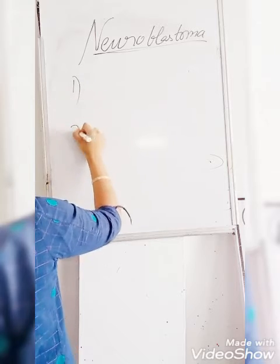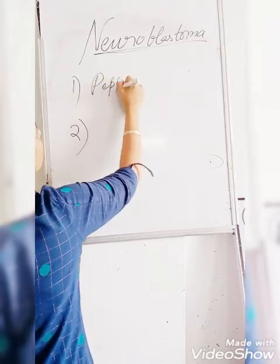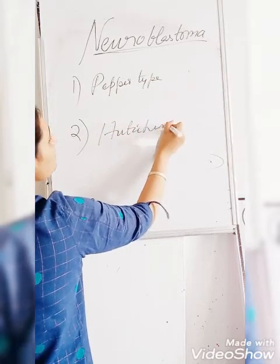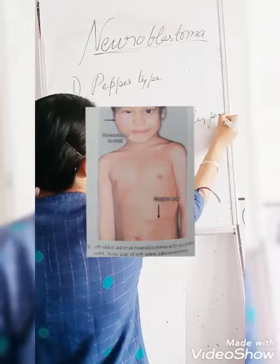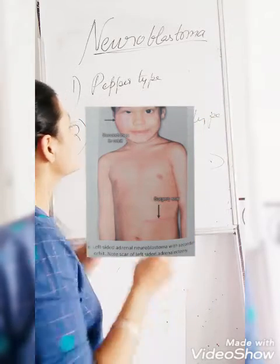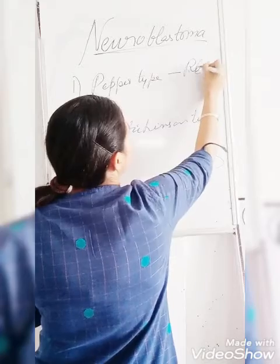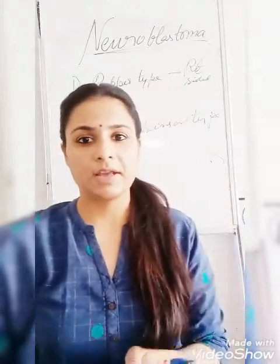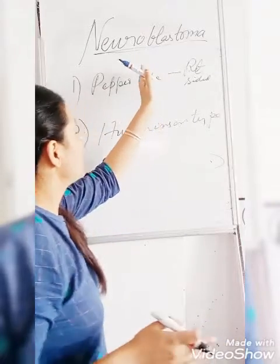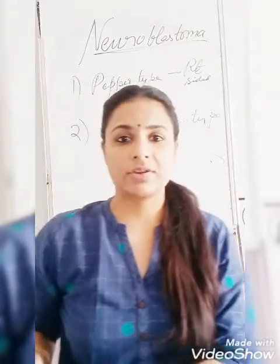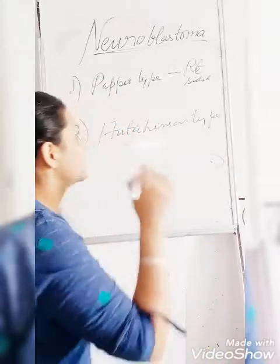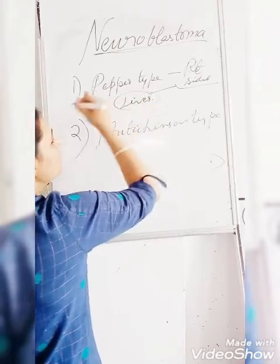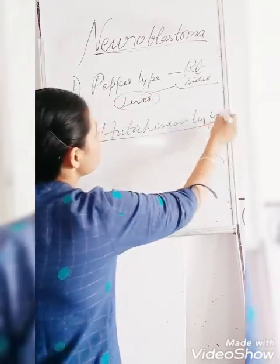The first type is the Pepper type. It is a right-sided tumour — a tumour of the right-sided adrenal medulla. The secondaries will be in the liver; metastasis goes to the liver. The second type is Hutchinson's type.